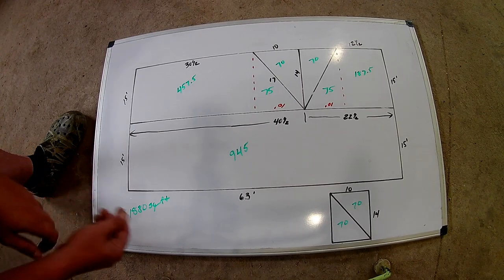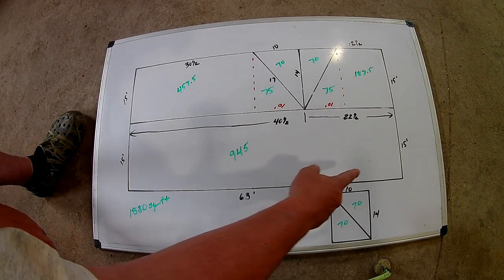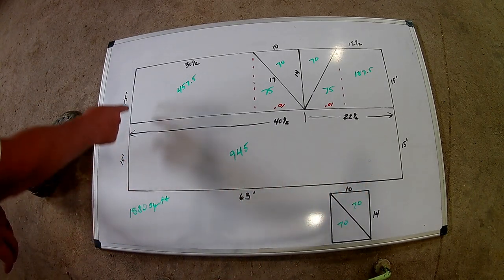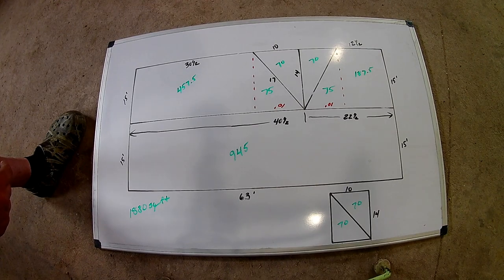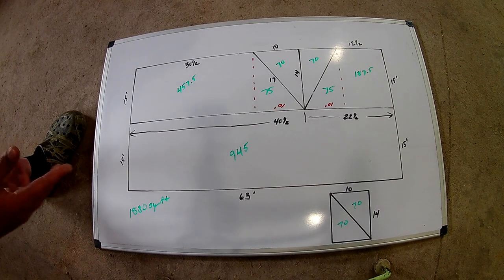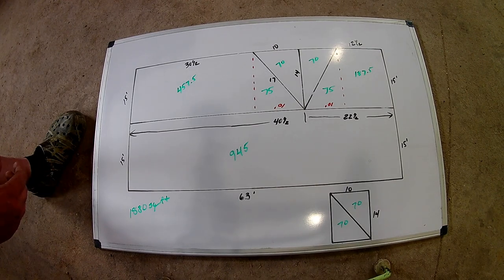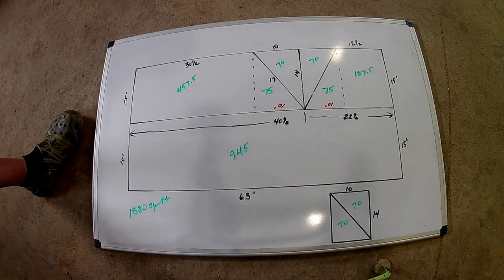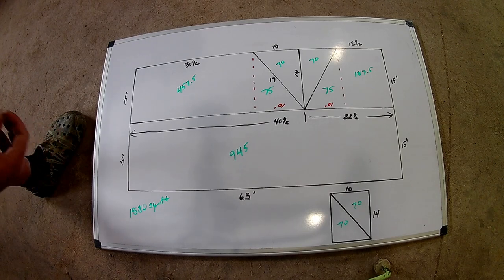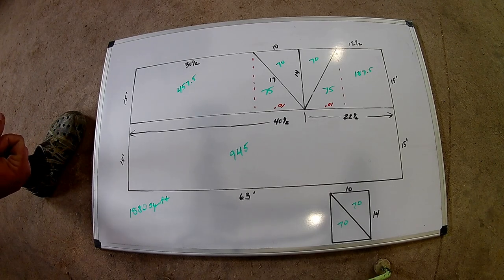And then to figure starter shingles, you're going to just figure out the length of the perimeter. If you're doing rake and eve starter shingles, you would just go around the entire perimeter to figure out your ridge. You're going to need 63 feet plus 14 feet. And you're going to want to round up a little bit on those numbers so that you're not short.